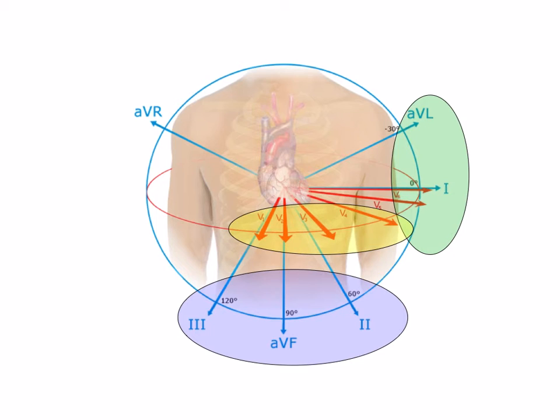If we look at leads AVL, 1, V5, and V6, now we're looking at a different area of the heart. Here, we're looking more at the lateral wall. So when looking at the EKG, that's the area of the heart that we're analyzing. And finally, when looking at leads 2, 3, and AVF, we're really taking a greater look at the inferior wall of the heart.